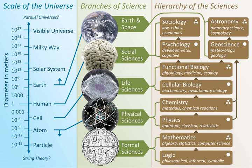Systems theory is the interdisciplinary study of systems in general, with the goal of elucidating principles that can be applied to all types of systems in all fields of research. The term does not yet have a well-established, precise meaning, but systems theory can reasonably be considered a specialization of systems thinking and a generalization of systems science. The term originates from Bernays's general system theory and is used in later efforts in other fields, such as the action theory of Alcott Parsons and the system theory of Nicholas McLuhan. In this context the word 'systems' is used to refer specifically to self-regulating systems, i.e. that are self-correcting through feedback. Self-regulating systems are found in nature, including the physiological systems of our body, in local and global ecosystems, and in climate.